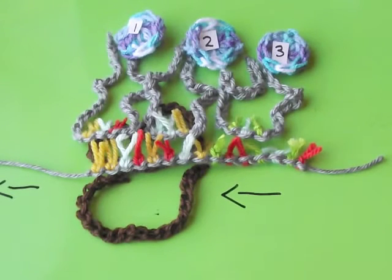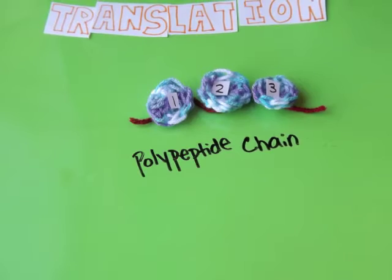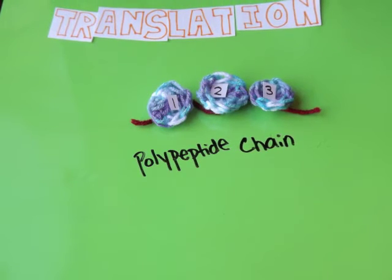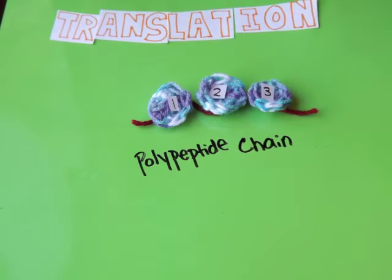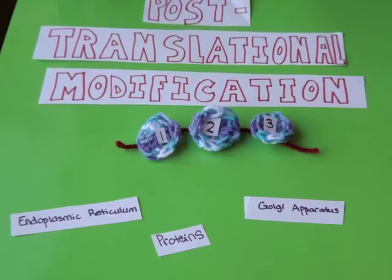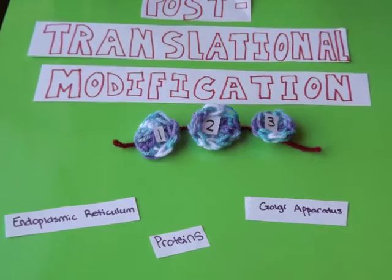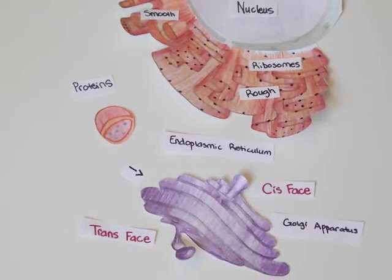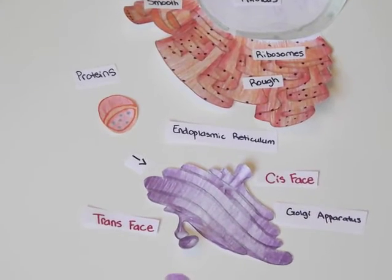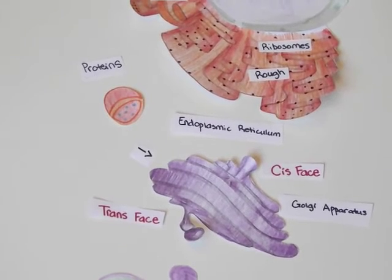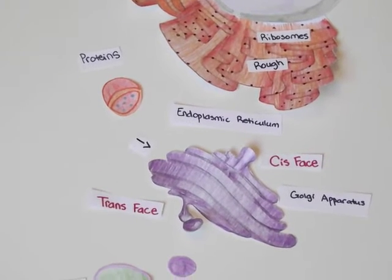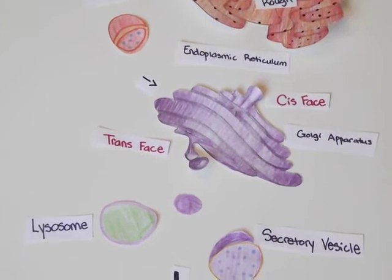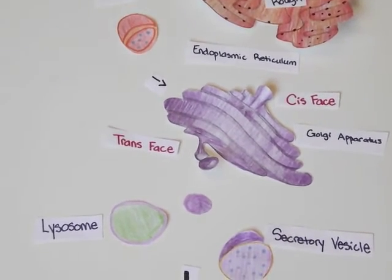The ribosome reads code from the mRNA and assembles the amino acids into a polypeptide chain. Post-translational modification involves the editing of the polypeptide chains. This processing involves actions from the rough endoplasmic reticulum and the Golgi apparatus, which ensure that a final protein is produced from the polypeptide chain.